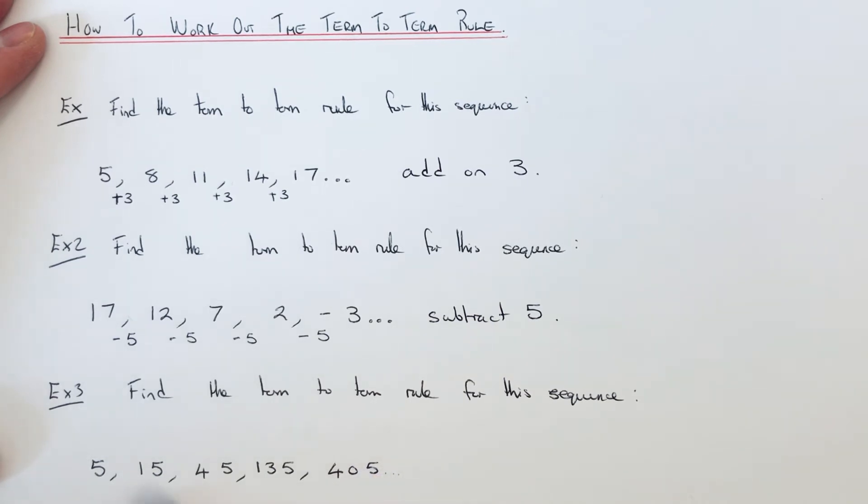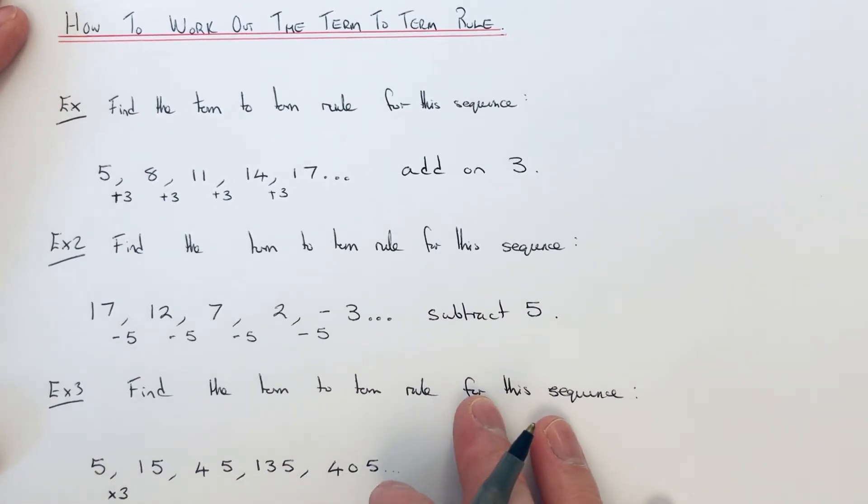This time then if you work out the differences we get 10 then we get 30. So it's not looking like the same number between each term. However, if we do 15 divided by 5 that is 3. So 5 times 3 gives 15. So let's just check that works for the next one.